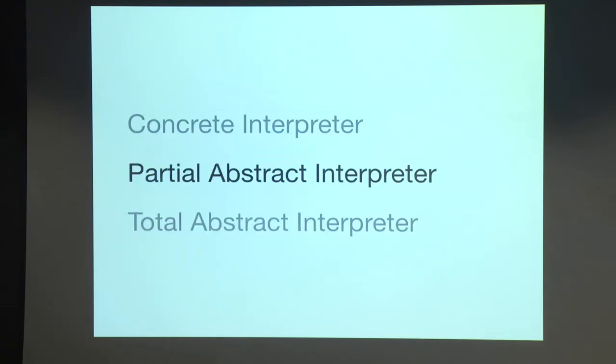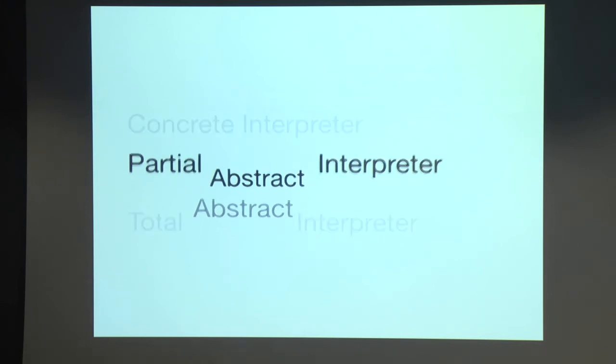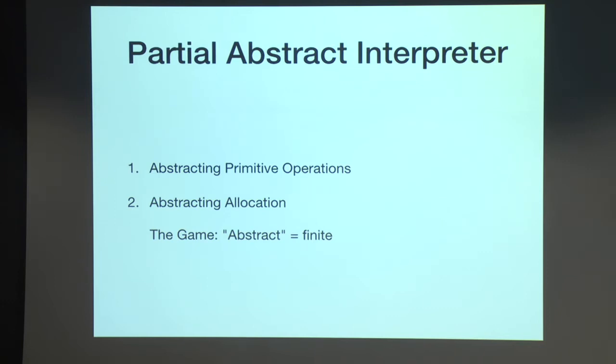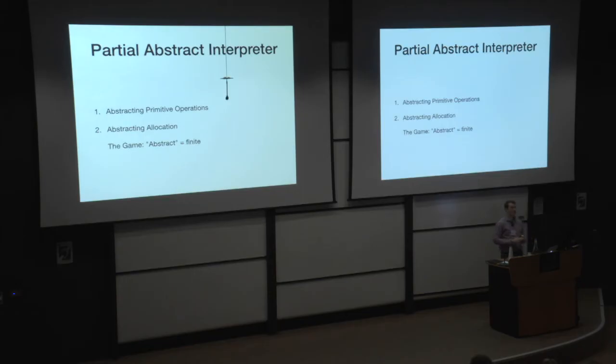So this was the reason that we did things in this non-standard way, was so we could support instrumentation. So now we're going to move from a concrete interpreter to start talking about abstract interpreters. So to make this interpreter an abstract interpreter, there's two things we need to do. We need an abstraction for primitive operations and primitive values, and we need an abstraction for allocation.